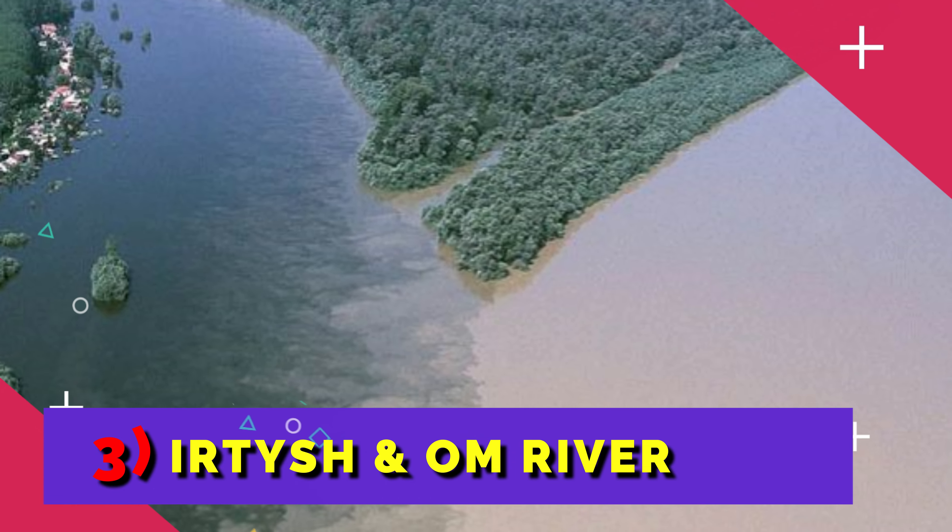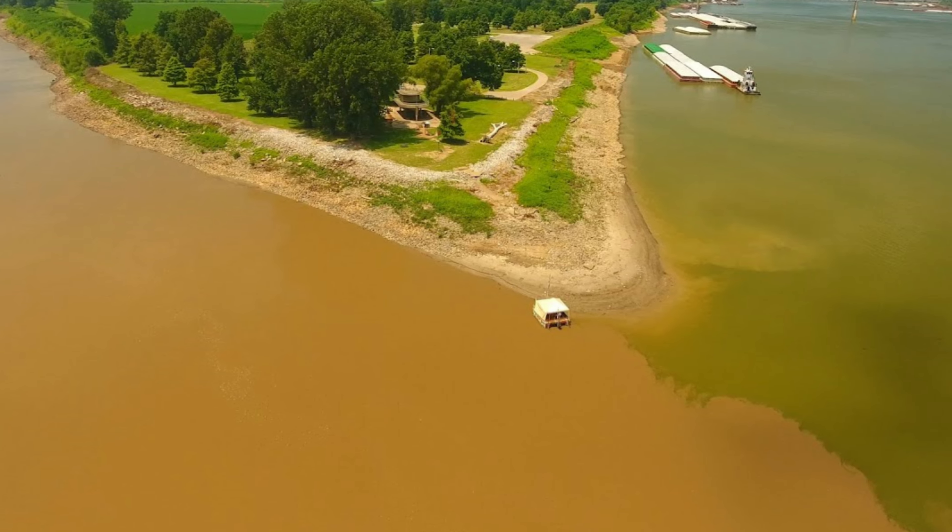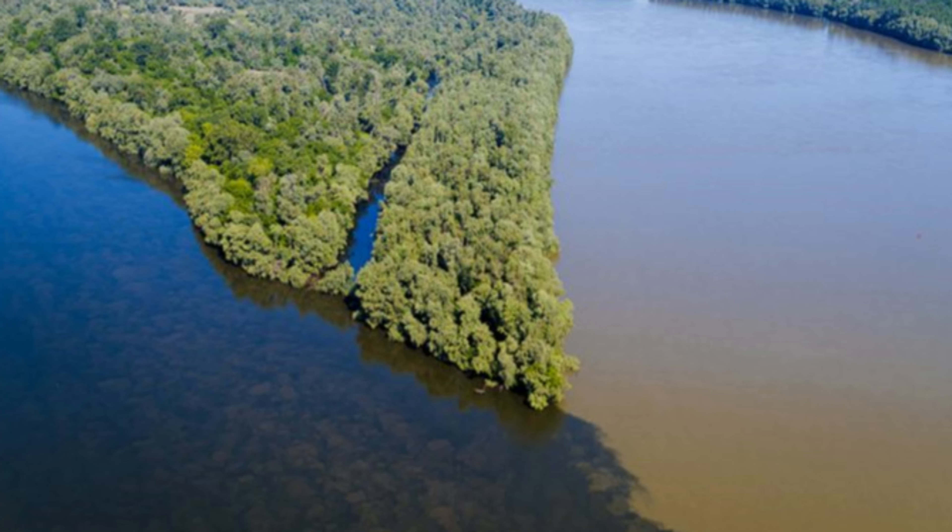Number three: Irtysh and Om. These two rivers flow into each other in Omsk, Russia. The Irtysh is cloudy and the Om is pure and transparent.